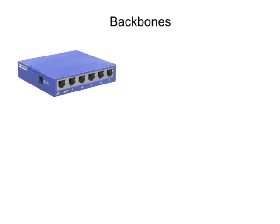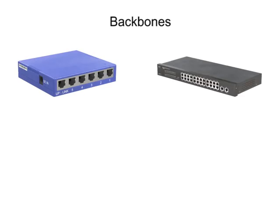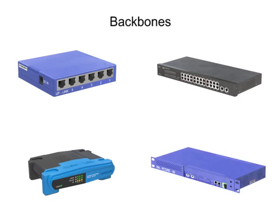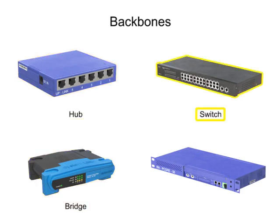Signal flow and data transfer are assisted within a network by various devices known as backbones. The four different backbone devices are hubs, bridges, switches, and gateways. Each device transports data in a specific way.